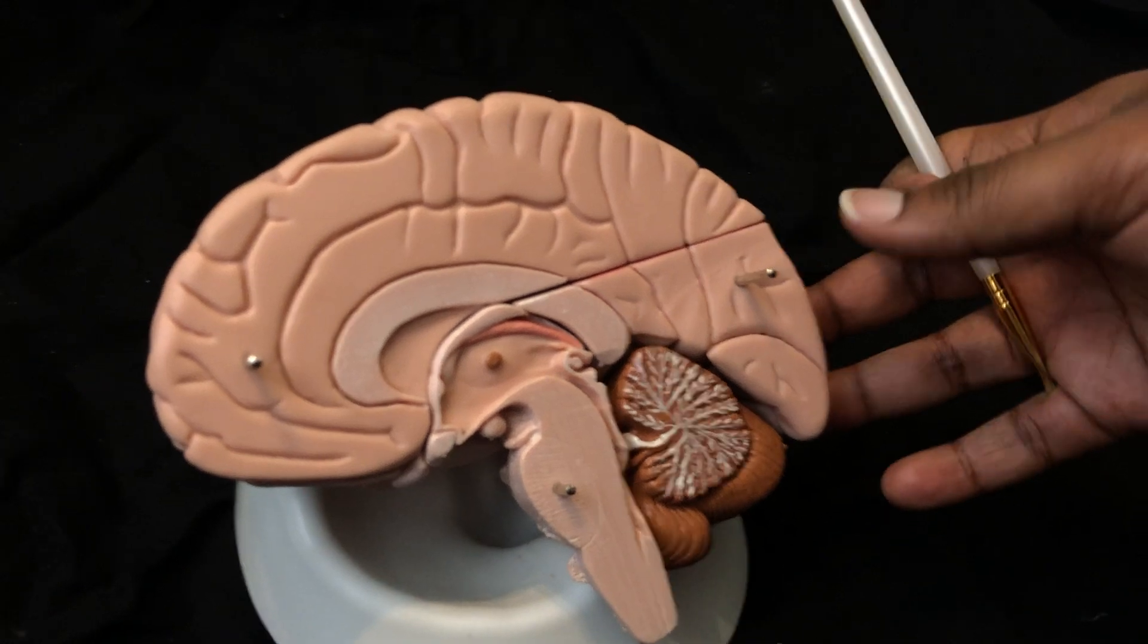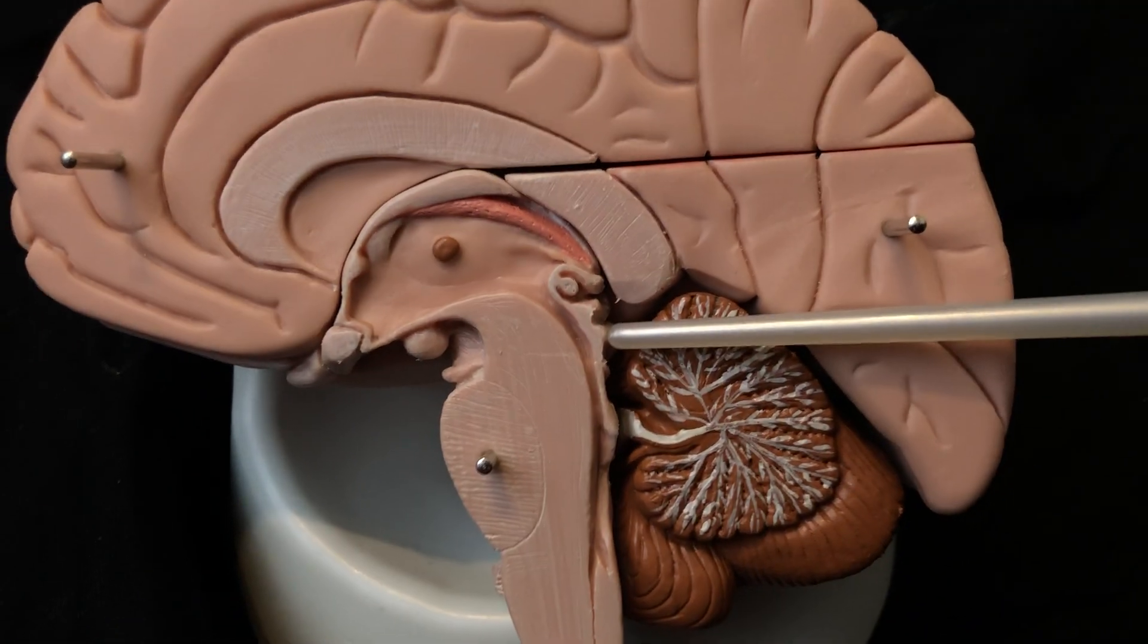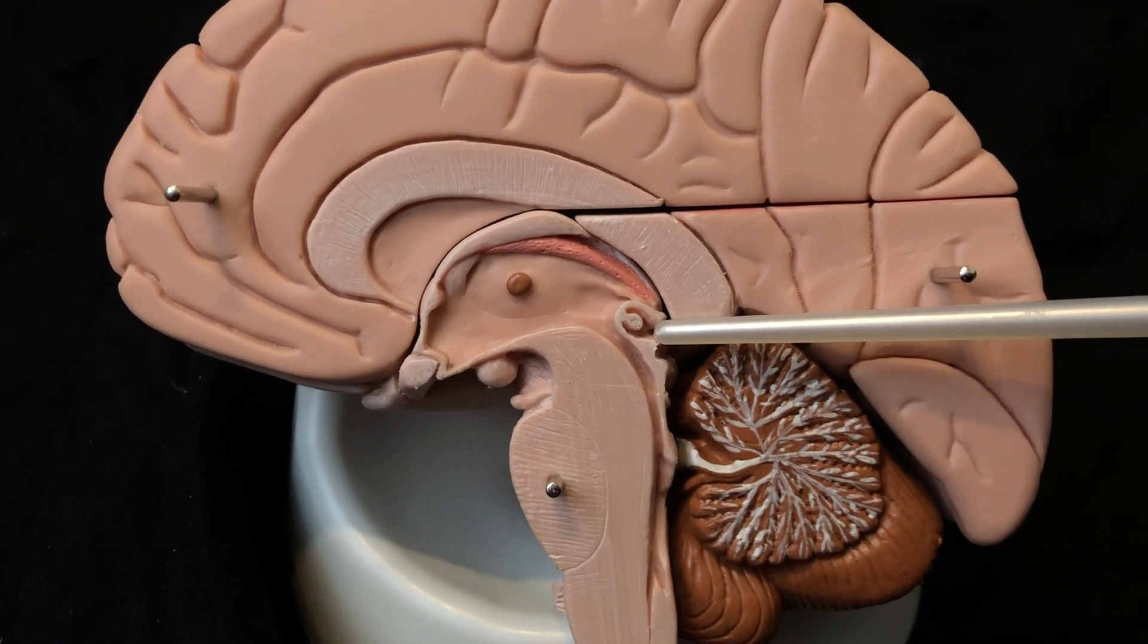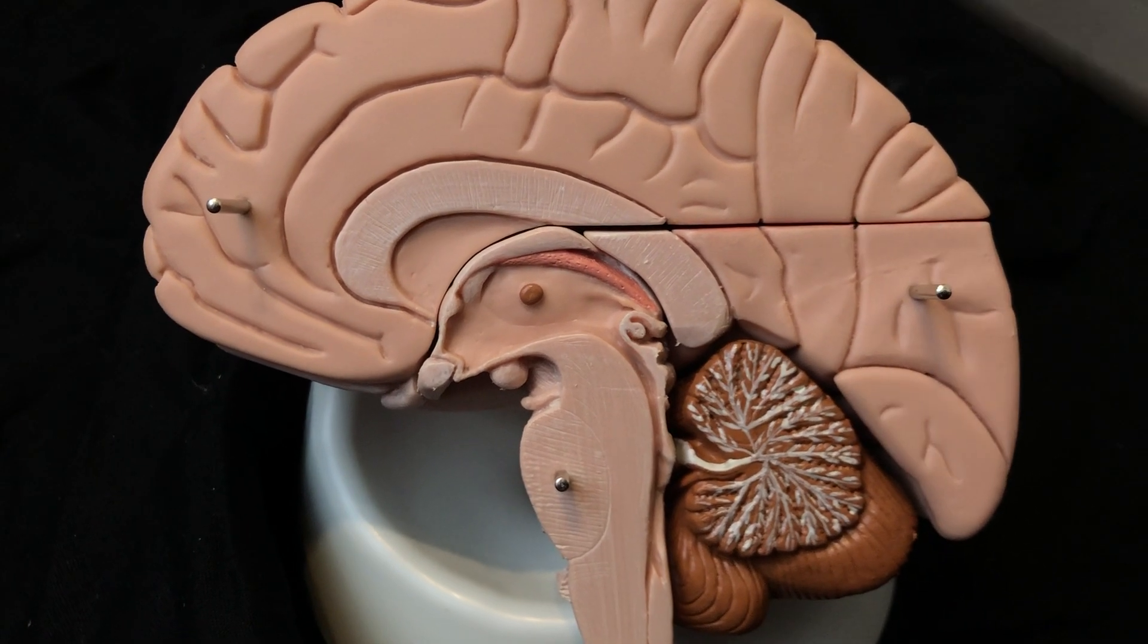Right here, this bump you can turn. This is the corpora quadrigemina inferior colliculus. And above that would be the corpora quadrigemina superior colliculus. And right above that would be the pineal gland.